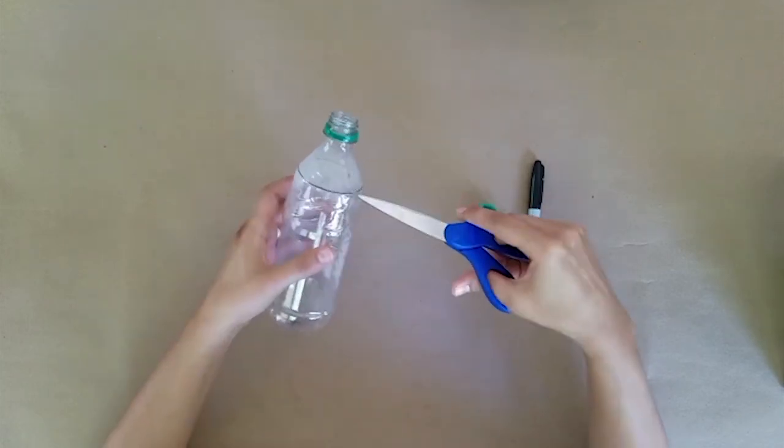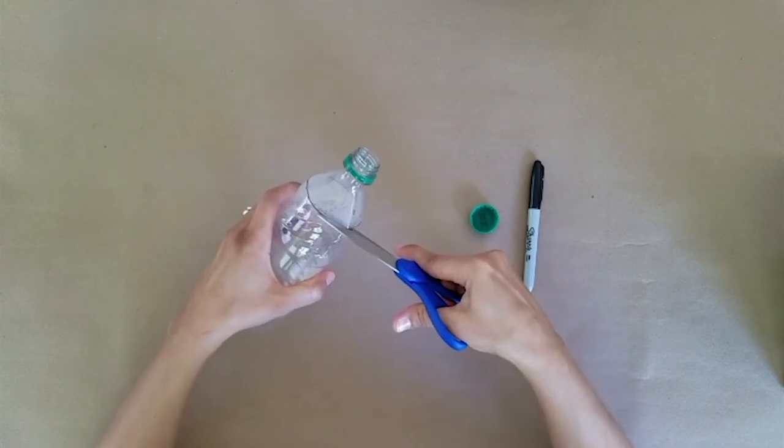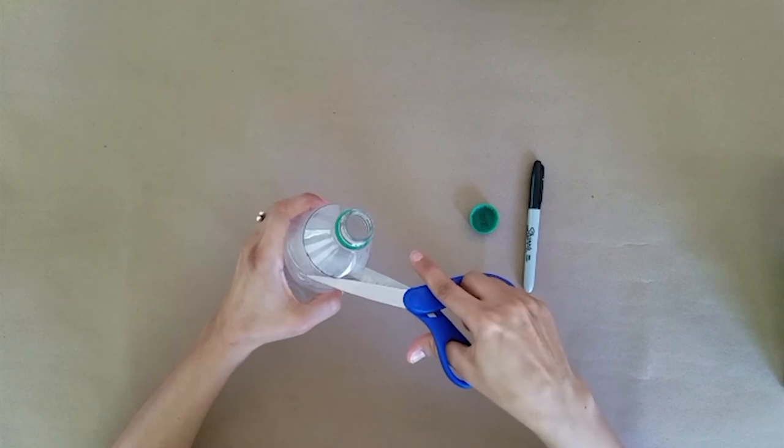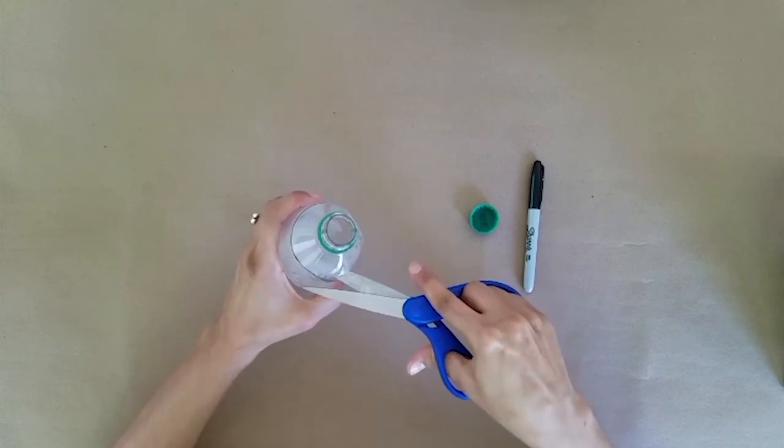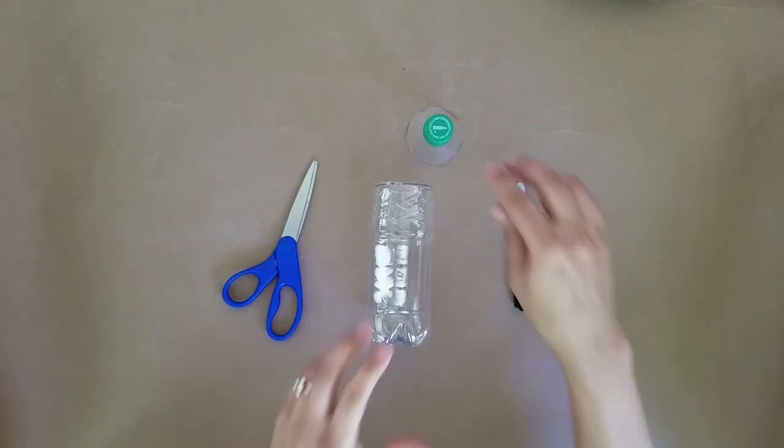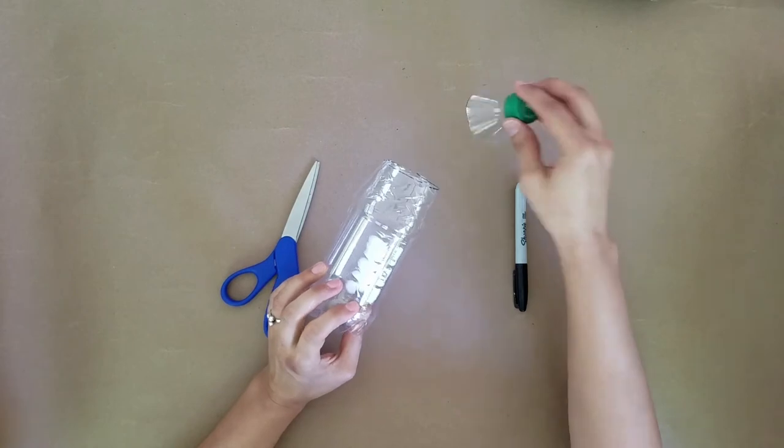After you've drawn your line around the top of the bottle, you'll take your scissors and poke a hole through the bottle and cut around the line. For younger artists, you might want to ask an adult for help cutting into the water bottle. So once you've cut all the way around your bottle and removed the top...